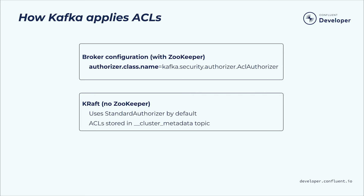Standard Authorizer does all of the same things that ACL Authorizer does for ZooKeeper-dependent clusters. When a broker receives a request, the authorizer authorizes the request action if there are no deny ACLs that match the action, and there is at least one allow ACL that matches the action. In other words, deny ACLs always trump allow ACLs. Out of the box, Kafka gives you the tools you need to apply fine-grained access controls to all your Kafka resources, with permissions specified on behalf of individual user principals.